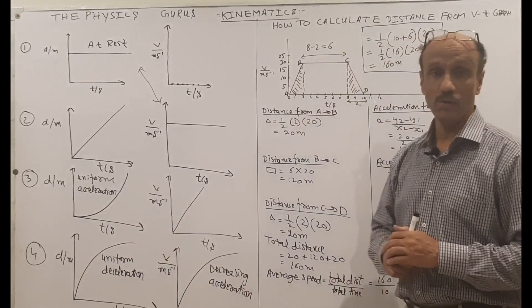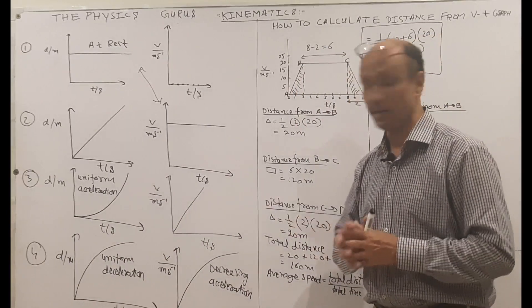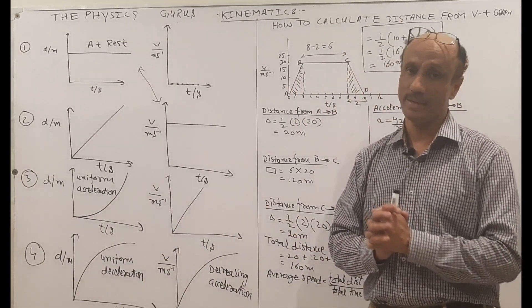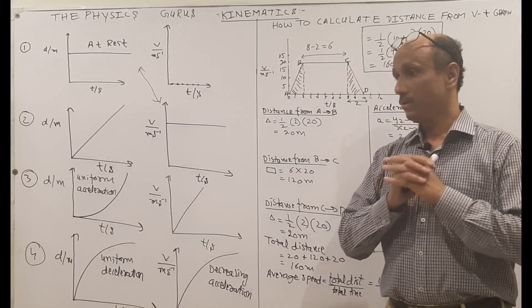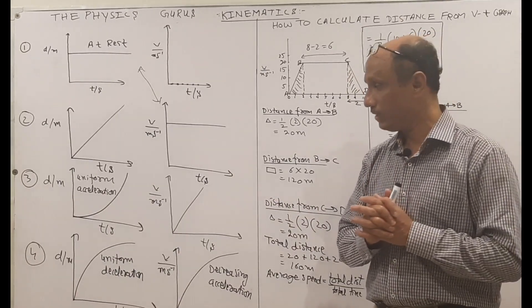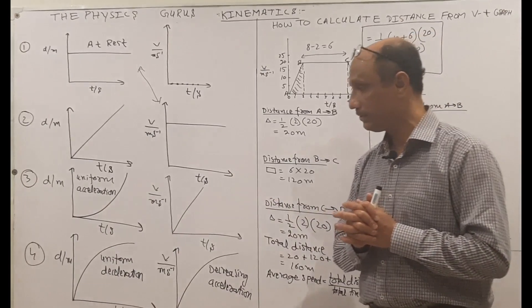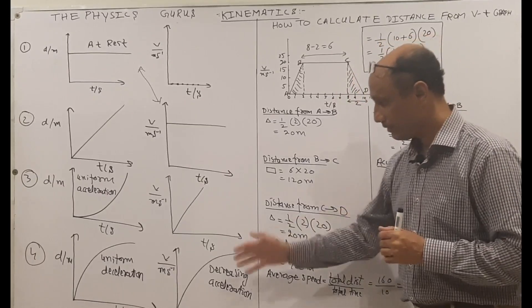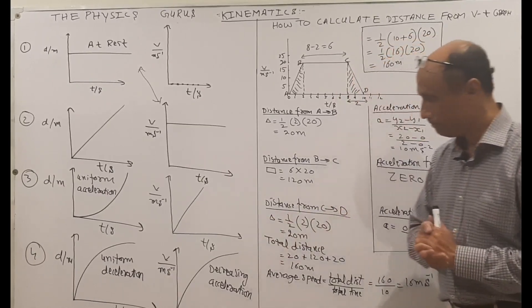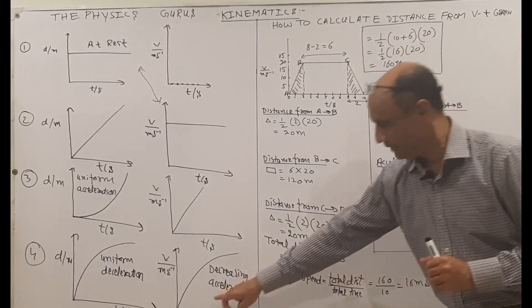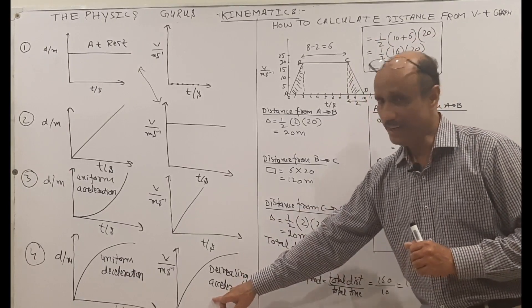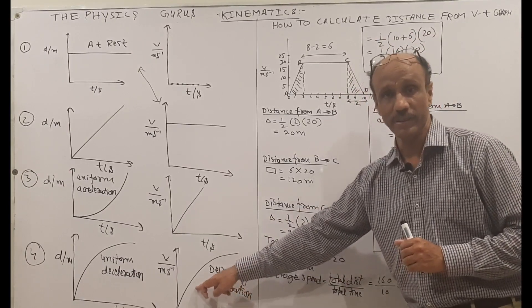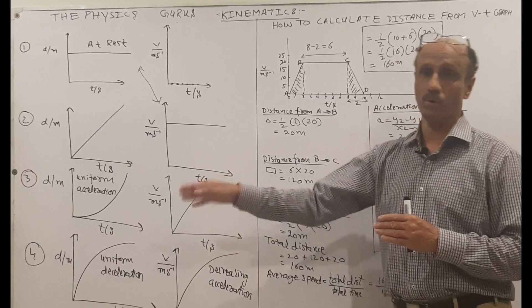Graph number four represents uniform deceleration in the DT graph — deceleration because the speed is decreasing. Whenever there is a decrease in speed, we say there is uniform deceleration. The next graph shows decreasing acceleration, which is not deceleration; the velocity is still increasing.